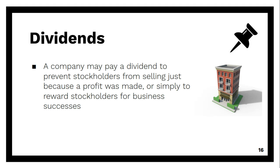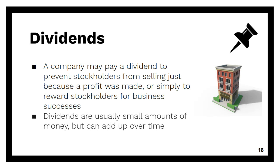A company may pay a dividend because it wants to prevent stockholders from selling once a profit is made. Otherwise, once a company's stock rises, many shareholders may sell their stocks for a profit, which means the company has to then pay out money. This can prevent future growth and hurt the company's stock price, just like what happened to so many companies during the stock market crash of 1929. Companies may also pay a dividend simply as a reward or a thank you to its stockholders for helping contribute to the business's success.